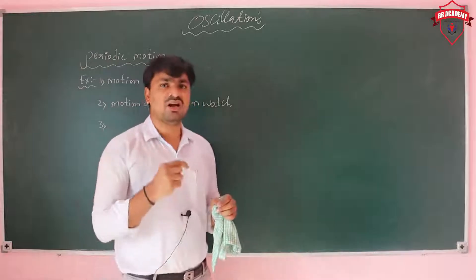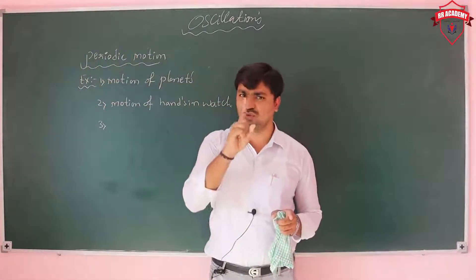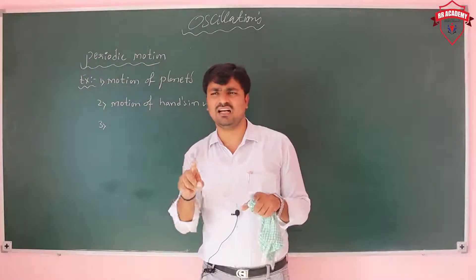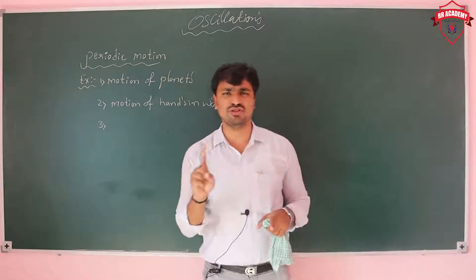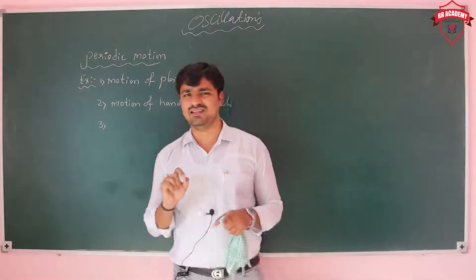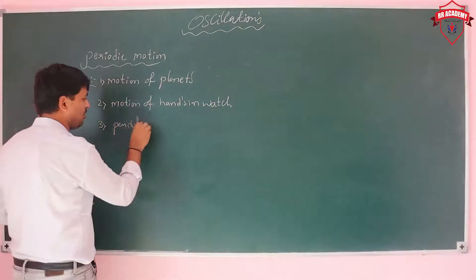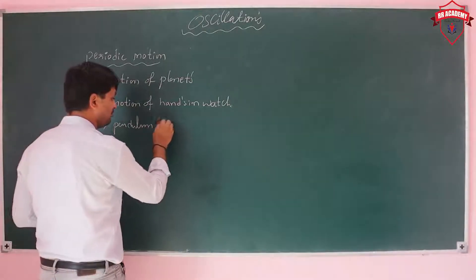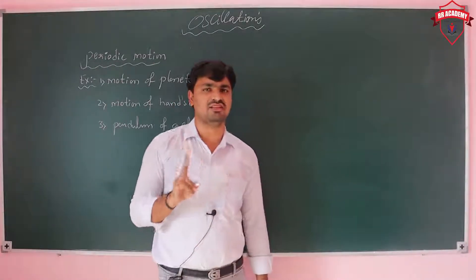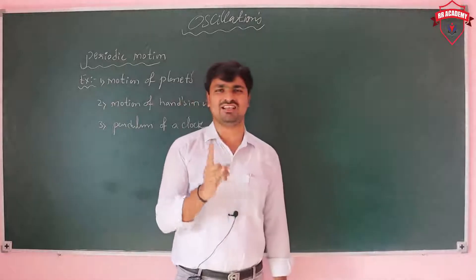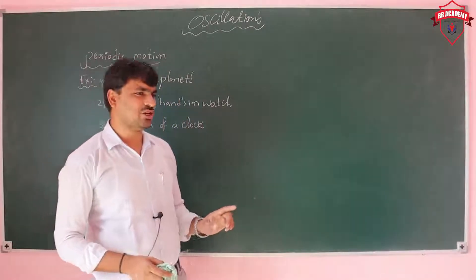You may think that periodic motion only occurs in a circular path, but that is not necessary. A circular path or a to-and-fro motion — both can be periodic, as long as the motion repeats in equal intervals. For example, the pendulum of a clock also satisfies this condition.